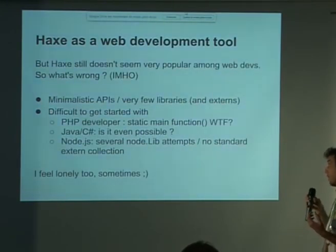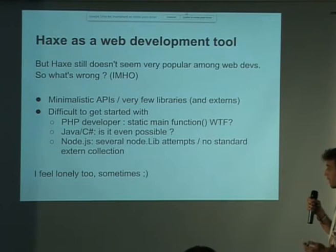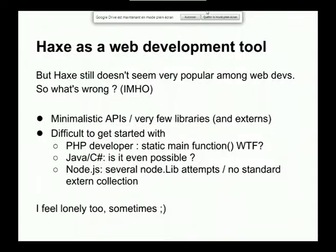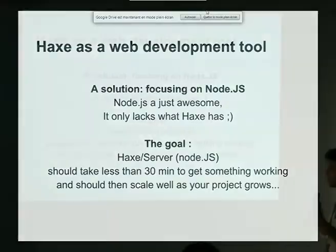So, what's wrong? I believe now, for server side, it's a bit difficult to start with. PHP developers don't feel really good with the syntax of Haxe. I don't even know if Java and C-sharp include a web target or something like that. And Node.js is currently a little dirty. There are lots of attempts here and there, but there is nothing that is standard and supported by a large community. So, just like Jason, I feel lonely. My solution — the thing I'm working on right now — is focusing on Node.js to provide Haxe with a proper server-side solution.